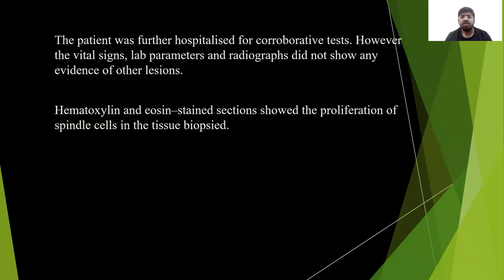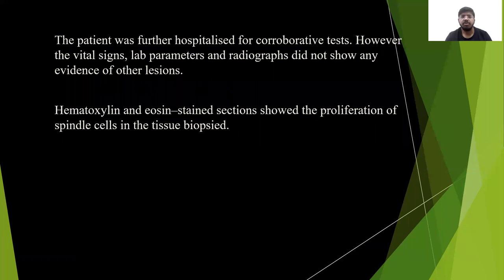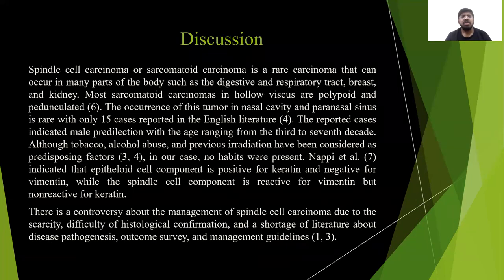On histopathology, the lesion was proved to be a spindle cell carcinoma. Spindle cell carcinomas or sarcomatoid carcinomas are rare carcinomas that involve many parts of the body such as the digestive and respiratory tract. When involving a hollow viscus, it usually presents in a polypoid or pedunculated form. The occurrence of this tumor in the nasal cavity and paranasal sinuses is rare, as corroborated by English literature.